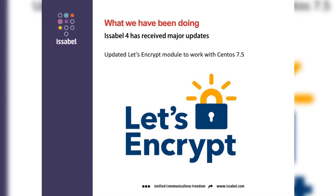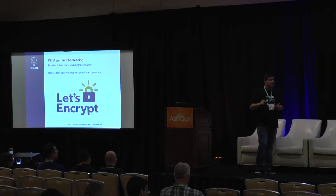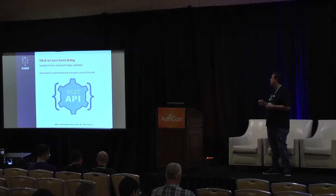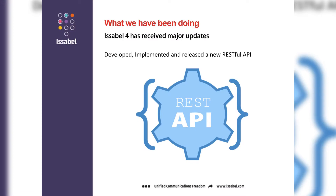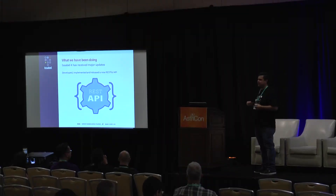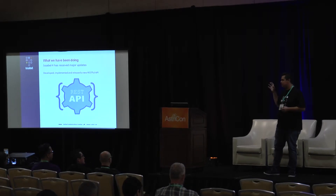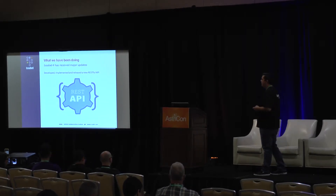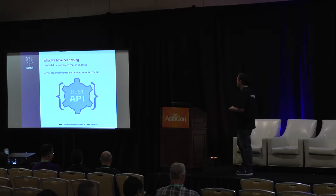On this new version, we updated the Let's Encrypt script to work on CentOS 7.5. There were some small things needed for it to work properly, and it's done. One of the biggest things the dev team has been working on lately is putting together a RESTful API to manage everything on the system — create extensions, trunks, and the sky's the limit. This is a homegrown API, it's an ongoing development, and it's very promising. We're very excited about it.